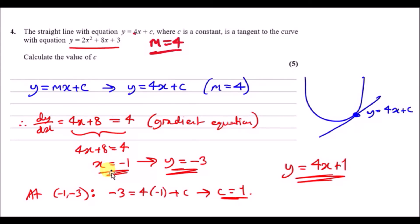And of course when you have an x coordinate, you might as well find a y coordinate. To get y, I just plugged in x equals minus 1 into this curve here and it gave me the y value of minus 3.